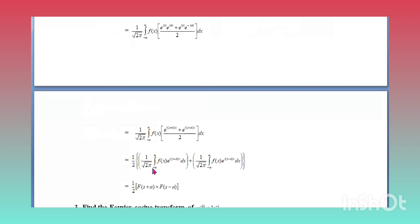Splitting the integral and factoring out 1/2: (1/2) times { (1/√(2π)) integral from −∞ to +∞ of f(x)e^(i(s+a)x) dx + (1/√(2π)) integral from −∞ to +∞ of f(x)e^(i(s−a)x) dx }. This equals (1/2)[F(s+a) + F(s−a)], proving the modulation property.